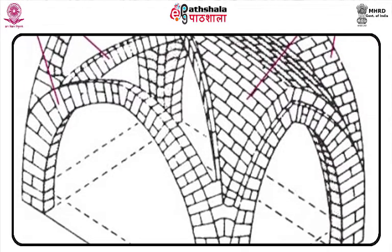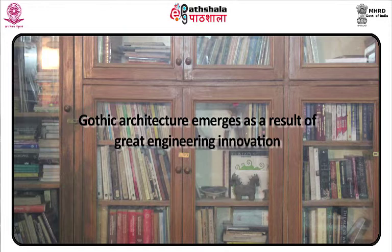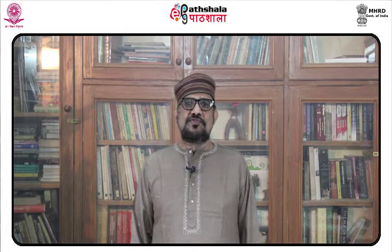Gothic architecture emerges as the result of great engineering innovation: how to create wider surfaces in stone along with higher structures. Romanesque buildings have either stone barrel vaults or coin walls, making their walls thick and allowing for small windows only. In the Gothic period, architects adopted the pointed arch, which has a lesser lateral thrust than the round arch and is easily adaptable to openings of various widths and heights. This allowed for the dissolution of the wall and fluid arrangement of space.